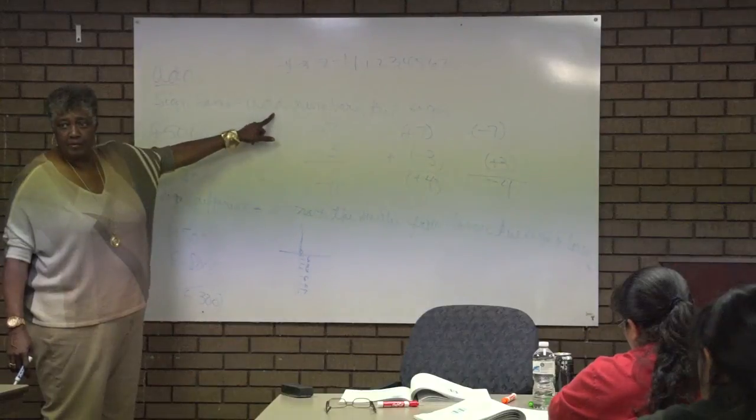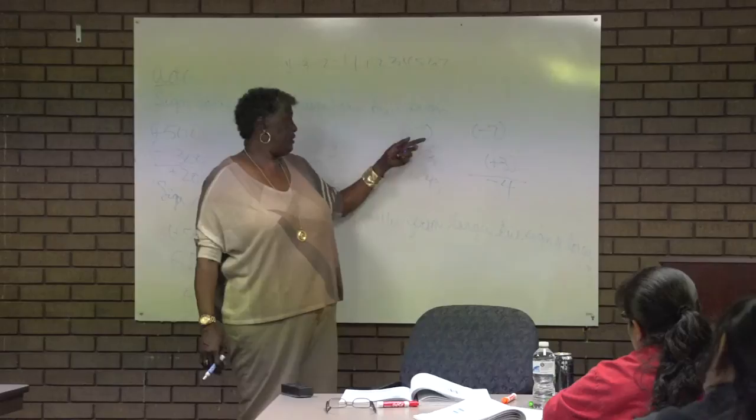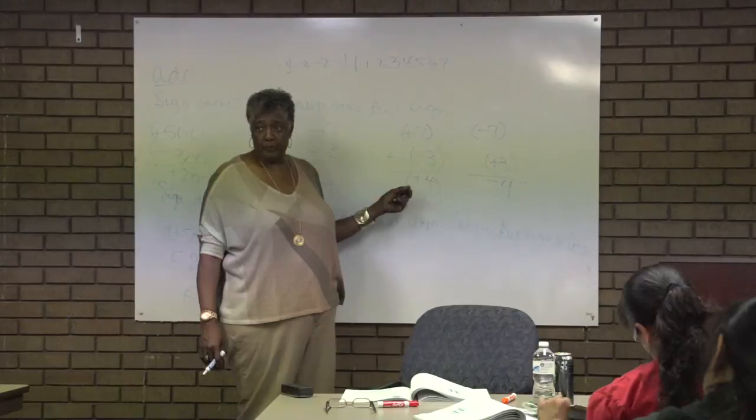Add the numbers, keep the sign. If the signs are different, it doesn't matter which one comes on top — three could have been up here, the seven down here, doesn't matter where they are. As long as you know that one is positive and one is negative, you're going to subtract the smaller number from the larger number and keep the sign of the larger number.